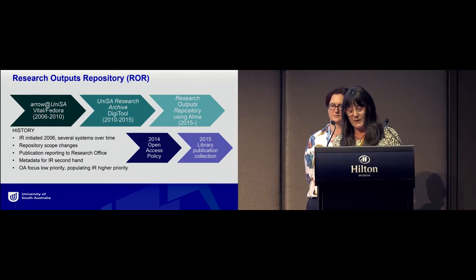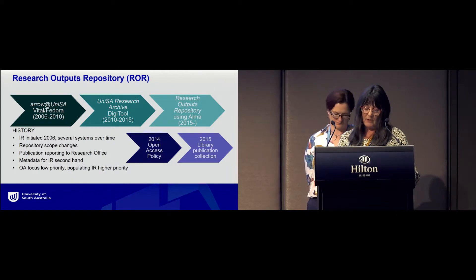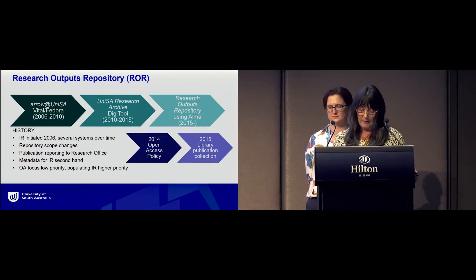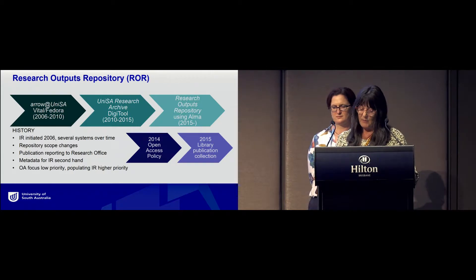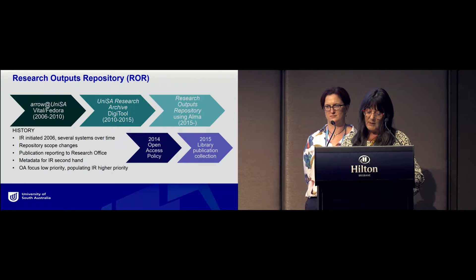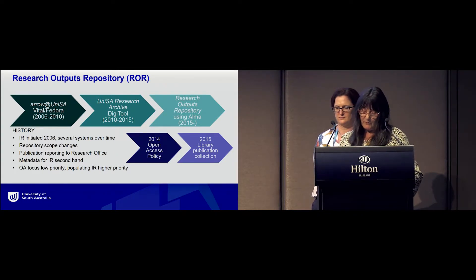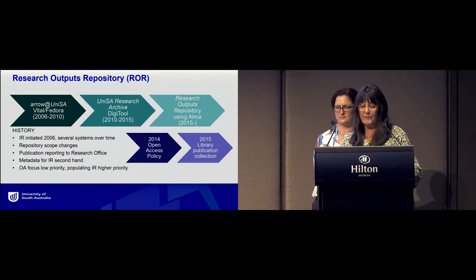It changed once again in 2015 to refocus only on research outputs. Up until 2015, the publication reporting cycle was such that the research office exported their metadata to the library, basically at the end of the food chain. So for the first few years, populating the repository was the prime focus, with a lower emphasis on making research outputs open access. There are also two major events that occurred during this time span: the university's open access policy in 2014, and the restructuring of the publication reporting process, which allowed research outputs to be reported to the library first in 2015.